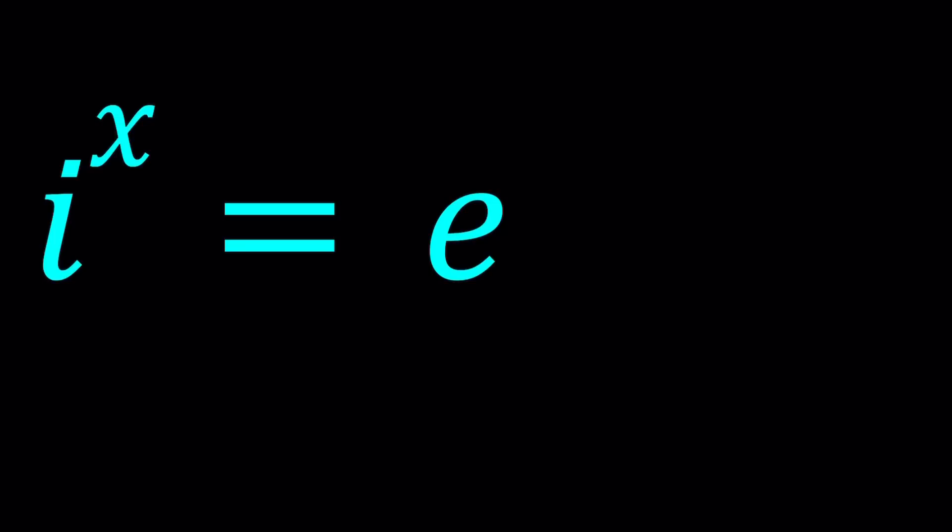So we have i to the power x equals e and we're going to be solving for x. Now, I'm also going to show you the result from Wolfram Alpha and also pose a question. Let's go ahead and start by natural logging both sides. If you ln i to the power x, that should equal ln e.